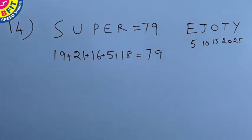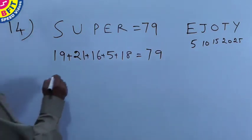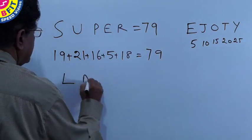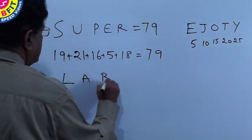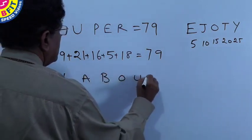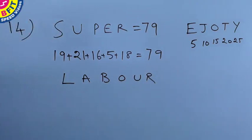This coding is called coding based on the positional value. Now the question is: what is the code for LABOR? Again, our EJOT mnemonic will help us.